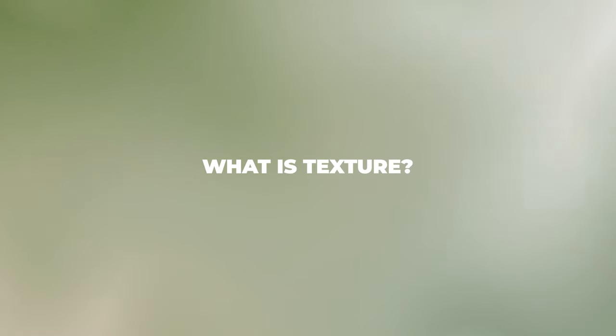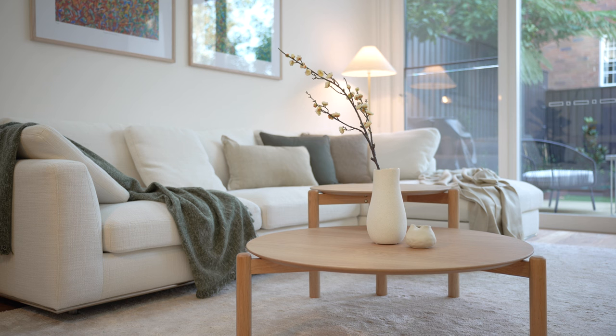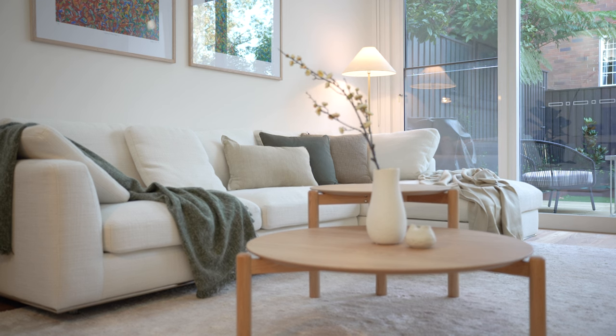It's always good to start with the basics. What exactly is texture? Put simply, texture refers to the surface quality of a material, which can be experienced either through touch or observed indirectly through the eye. Textures help to keep a space from feeling flat or one-dimensional. It can be broadly categorized into two main types: tactile texture and visual texture, both of which are often overlooked.